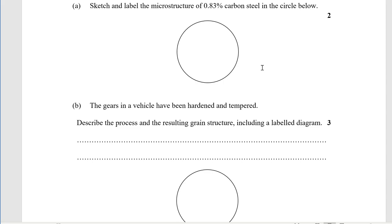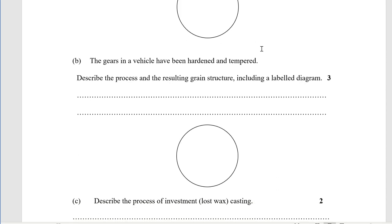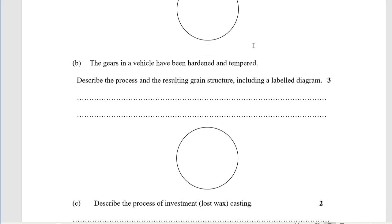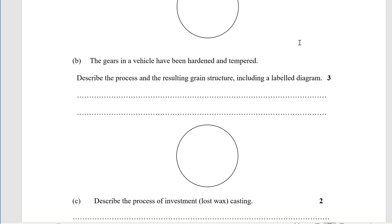Sketch and label microstructure of 0.83 percent carbon steel. You divide up in a couple of sections and then you draw parallel lines in different directions for each grain to represent 100 percent pearlite. You need to label it, if you don't draw an arrow and say pearlite then you don't get a mark. At 0.83 it should be all pearlite. If you are not sure about that, look at my videos on ferrous metals and steel alloys.